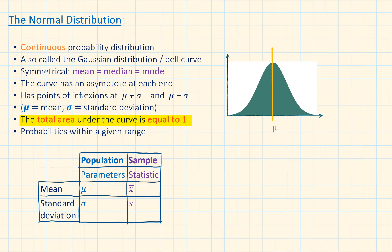The total area under the curve is always equal to 1, and has points of inflection at mean plus and minus the standard deviation.